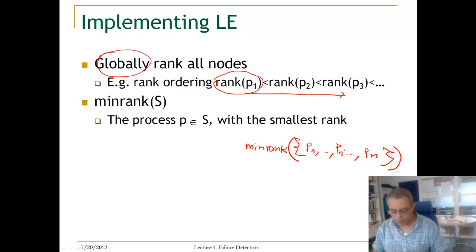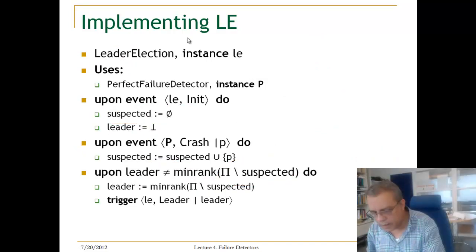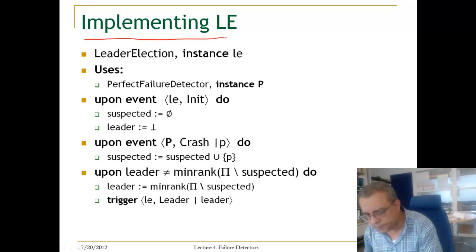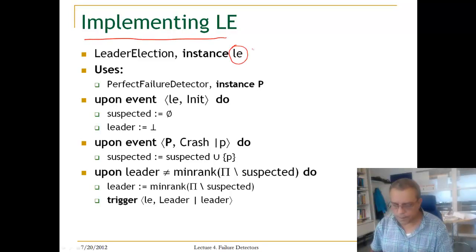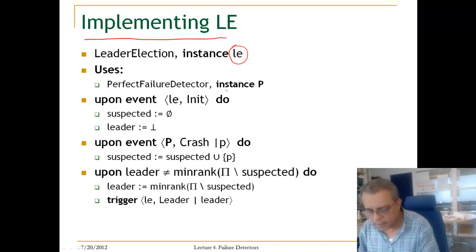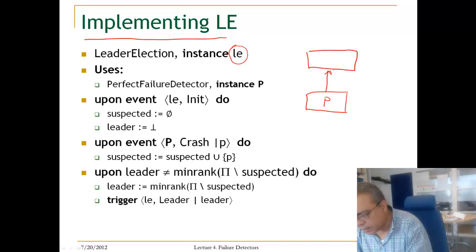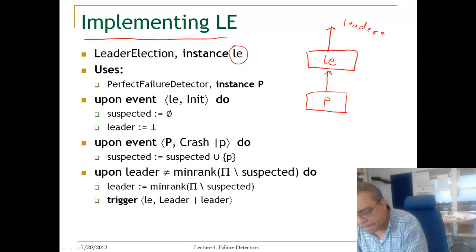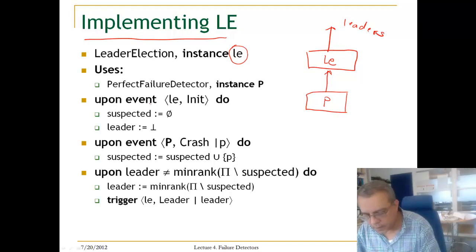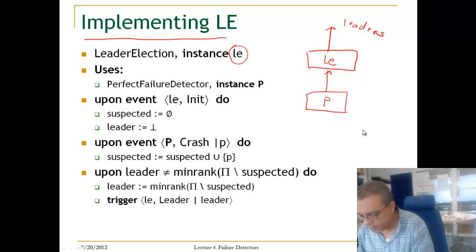Here is our leader election implementation. Our instance is LE. We use a perfect failure detector, which outputs crashes to the LE algorithm, which in turn outputs leaders. We assume that we have a static set of processes, so our initial set of processes is PI.